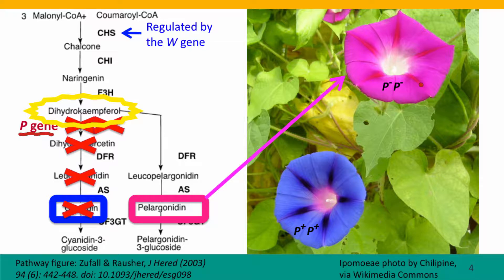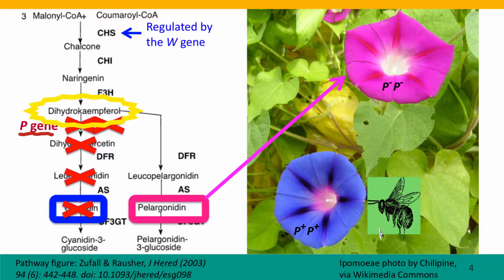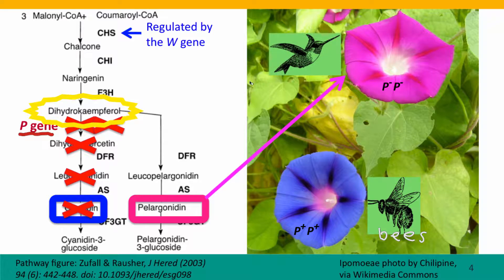This actually has interesting ecological consequences for morning glories, because the blue normal morning glories are pollinated by bees. The mutation that creates pink flowers produces flowers that are pollinated instead by hummingbirds. The white mutation also changes the pollinator status — it just makes the flowers not very attractive to any pollinators, and so these flowers tend to be self-pollinated, which again changes the biology of the plant.